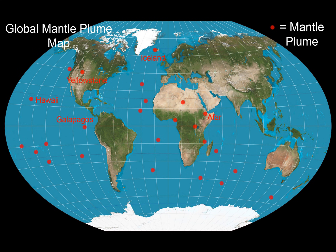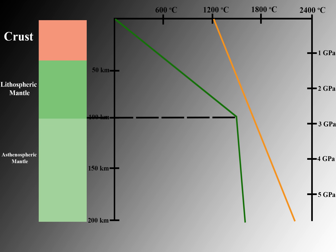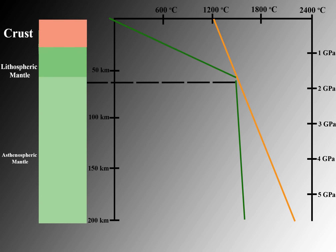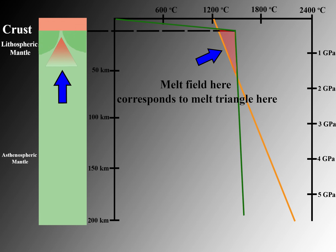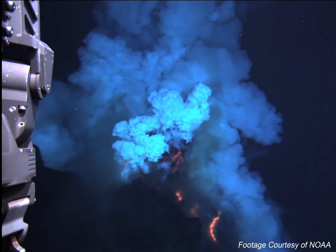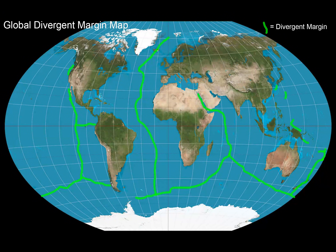Here is the global distribution of mantle plumes. The second way to partially melt the mantle is by letting the adiabatic temperature gradient of the asthenosphere extend to unusually shallow depths, thus decreasing the pressure on the mantle. This requires decreasing lithospheric thickness, as in the case of mid-oceanic ridges at divergent margins. As the lithosphere thins, the geotherm changes in response; if it thins sufficiently, the geotherm can cross the solidus and partial melting occurs in the melt triangle. This lava erupting in the Lau Basin was formed by decreasing pressure on the mantle. Here is the global distribution of divergent margins.